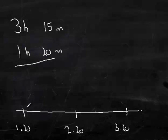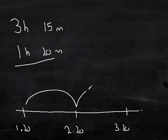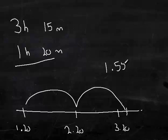If we count on from an hour and 20 minutes, one hour, we get two hours and 20 minutes. Another hour, we get three hours and 20 minutes. So that's two hours has elapsed, but we've actually gone on too much, so we need to take off five minutes. So that we get to three hours and 15 minutes, and that will give us an answer of one hour and 55 minutes.